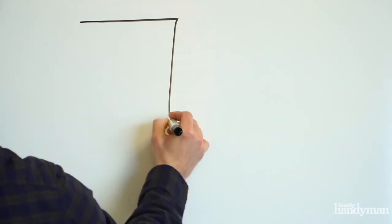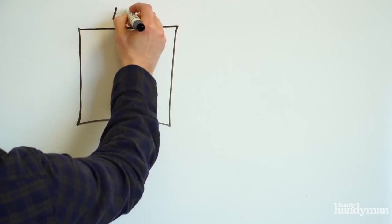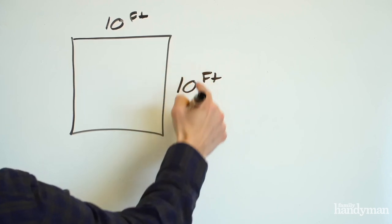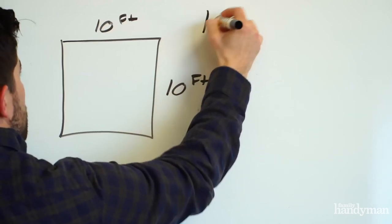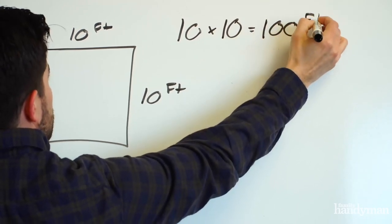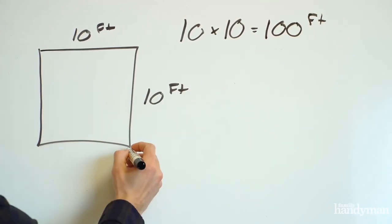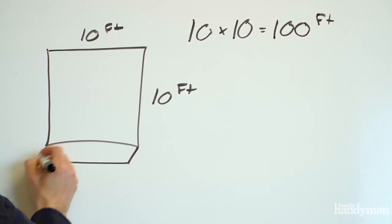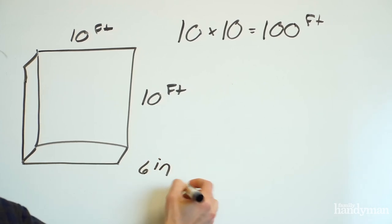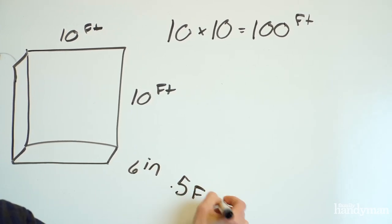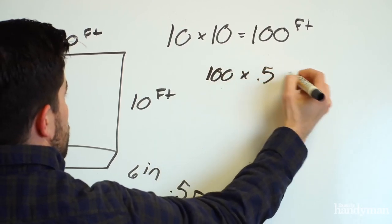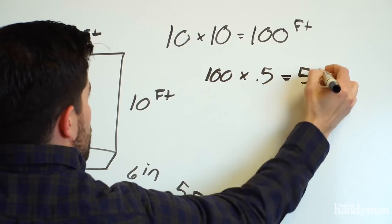To calculate the volume in cubic yards, you start with the width 10 feet and the length 10 feet. Multiply those together, you get 100 square feet. Then you take that times the depth of your slab. In this case it'll be about six inches or 0.5 feet. 100 times 0.5 and you get 50.